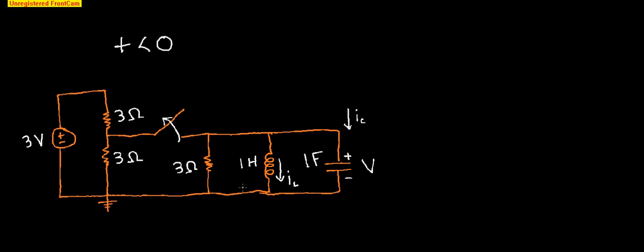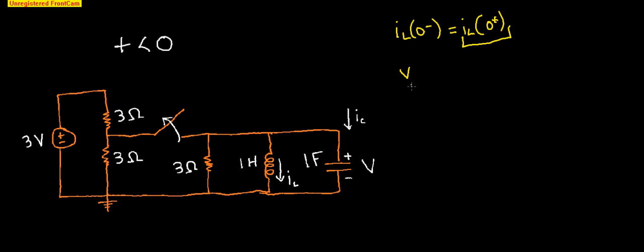The first thing we need to do is take a look at the circuit at time less than zero. We're going to rely on the fact that inductors can't change current instantaneously, and capacitors can't change voltage instantaneously. Meaning I_L(0-) equals I_L(0+). This is what we're looking for, and if we solve the circuit before time equal to zero, that will give us that answer. Same thing for voltage — V(0-) equals V(0+). At time less than zero, this switch is slammed shut, so the circuit is closed and has been like this for a long time, meaning it is in steady state.